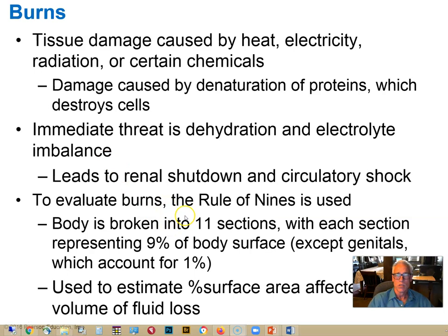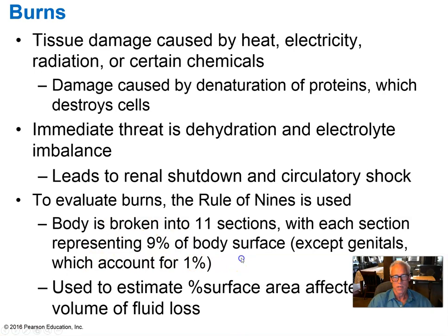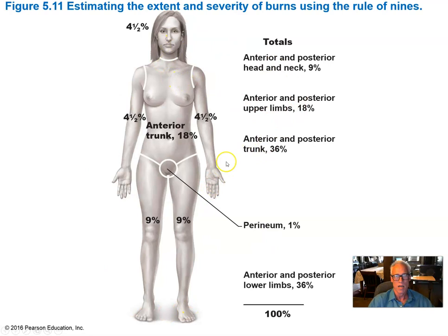One way to quickly evaluate burns in the field is to establish the percent of surface area involved using the rule of nines. Different regions of the body are each assigned a particular percent of the surface area. For example, the front and back of each leg represent 9%, the anterior and posterior of the torso each represent 18%, and the front and back of each arm represent 9%. By memorizing this pattern, you can quickly assess and report the percentage of surface area involved.